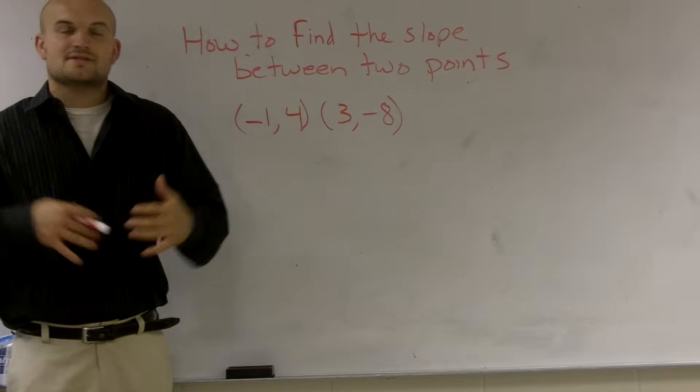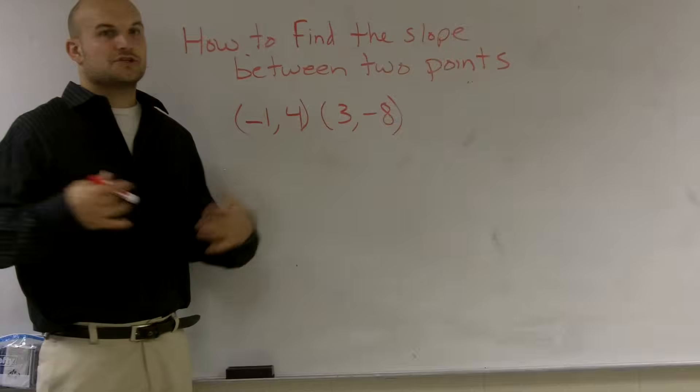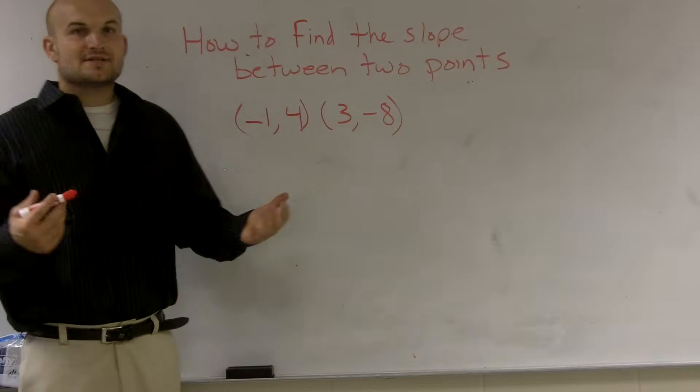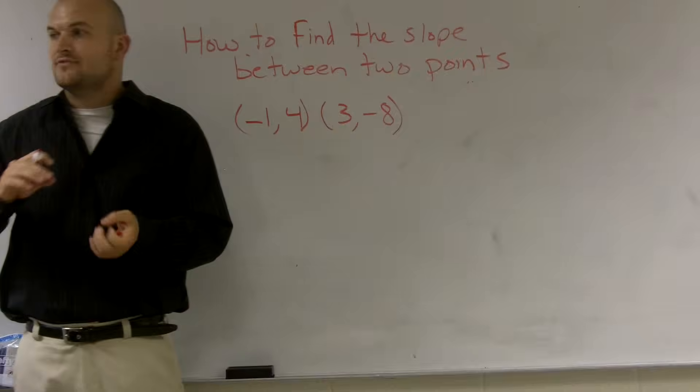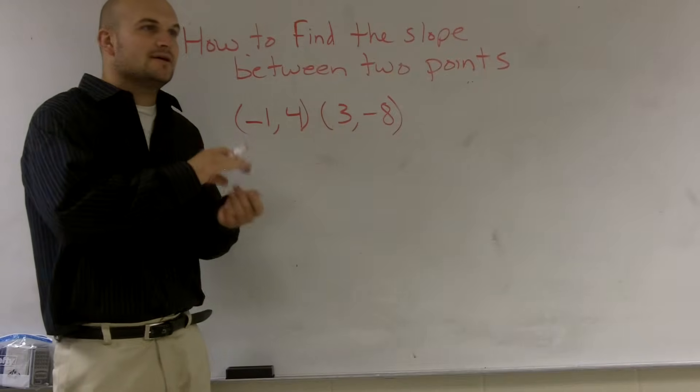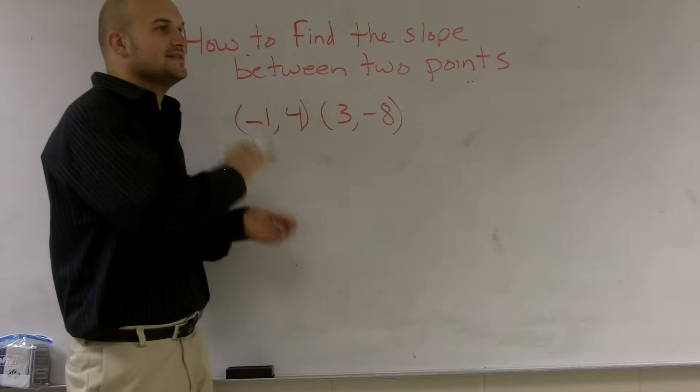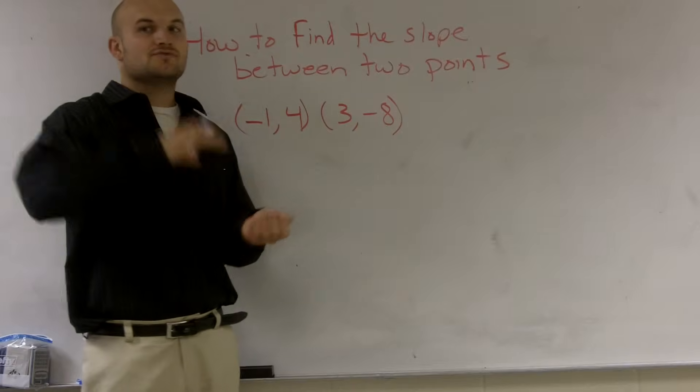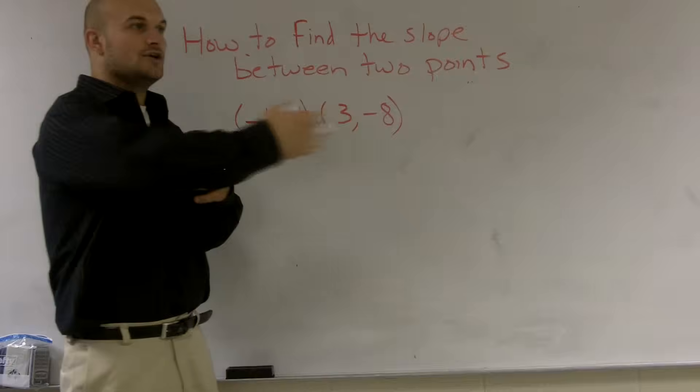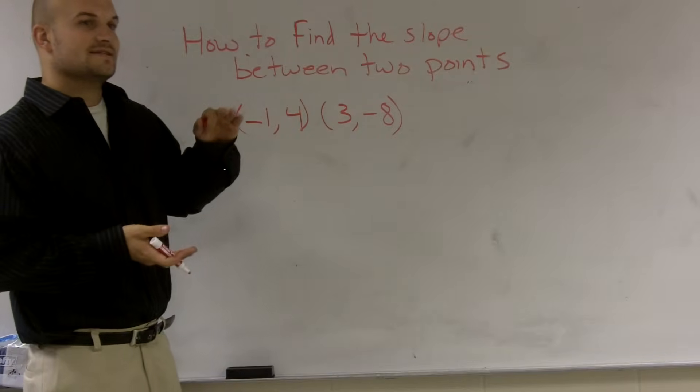When we're trying to find the slope, there's a lot of different ways that we like to describe slope. One of the most common ones is rise over run. And what we mean by rise over run is, between two points, what is the distance that your graph or your change in elevation has risen, and how far has it gone left or right. So we need to go ahead and define that distance.